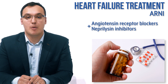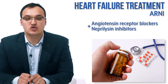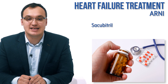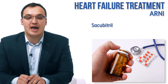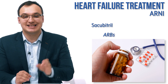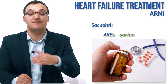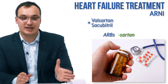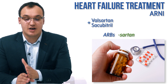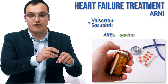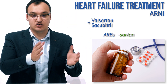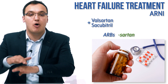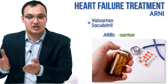In this case we will combine an angiotensin receptor blocker with a neprilysin inhibitor. The specific neprilysin inhibitor medication is sacubitril. We know that angiotensin receptor blockers end with '-sartan', so we have for example valsartan, and we will combine valsartan with sacubitril. Valsartan belongs to the angiotensin receptor blocker group and sacubitril belongs to the neprilysin inhibitor group.